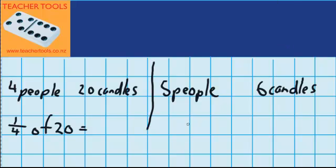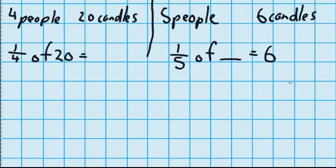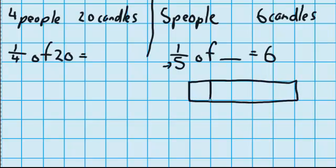And we can write that like this. 1 fifth of some amount of candles is 6. Now, my denominator tells me I'm thinking about a cake, this piece here.